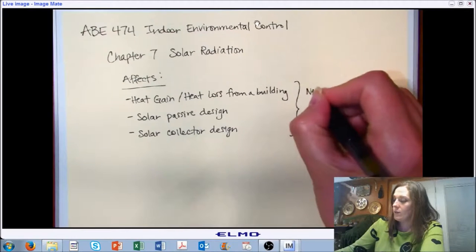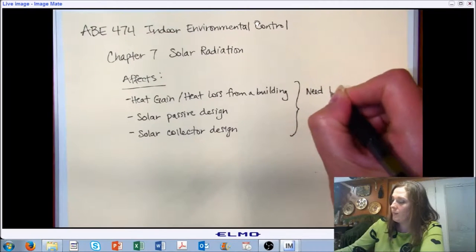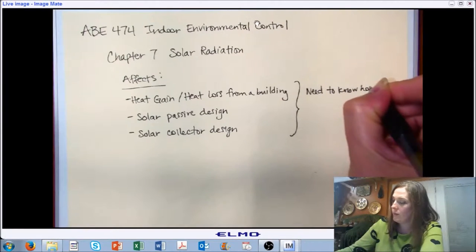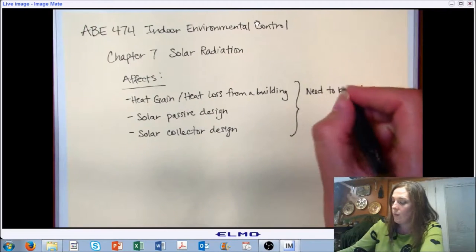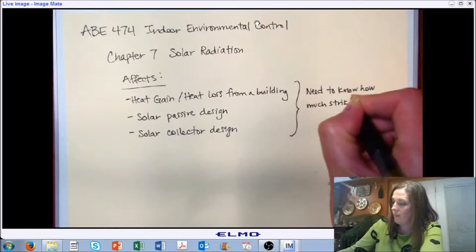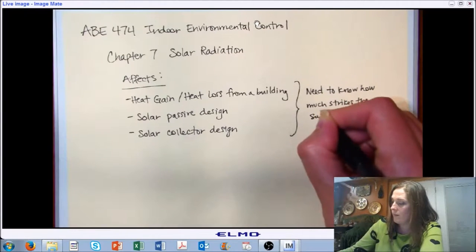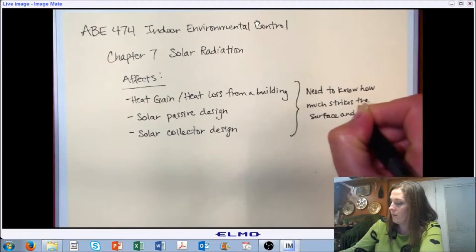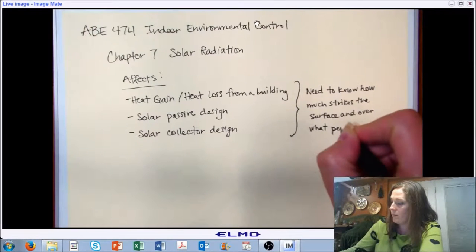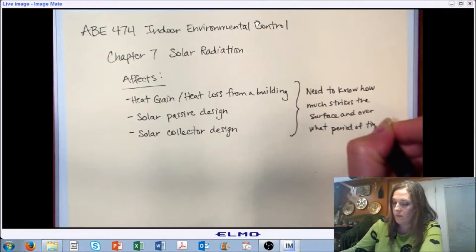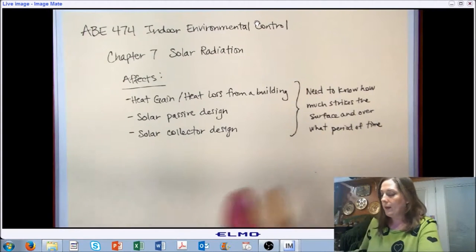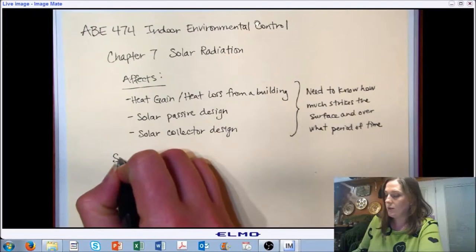In all of these cases, what we really want to know is how much solar radiation strikes the surface and over what period of time. There are a number of considerations that we need to think about when we're determining how much solar radiation is coming onto the surface.